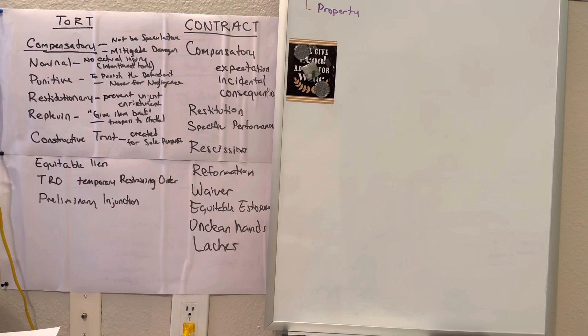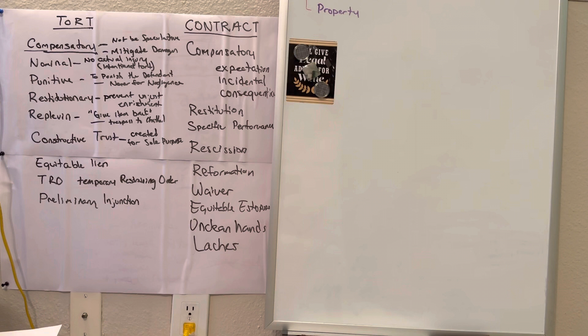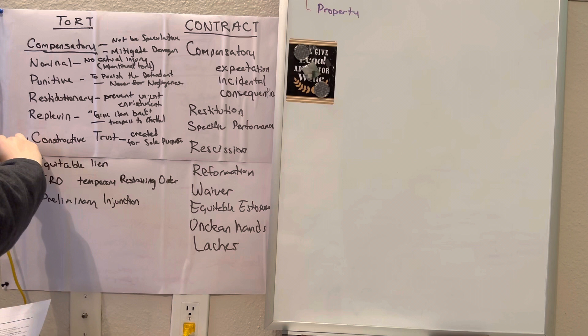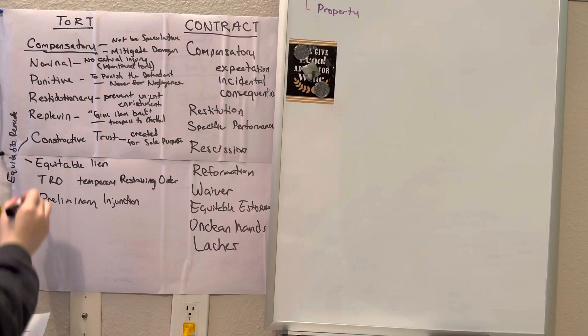Equitable lien. If a defendant improperly has title to property, the court may order a sale with proceeds going to the plaintiff. This is the appropriate remedy rather than a constructive trust if the plaintiff cannot trace his property to the defendant's property.